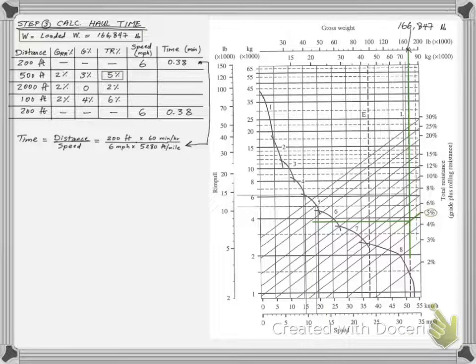We intersect with the sixth gear, which means the scraper will drive at 16.5 miles per hour. We calculate the time for the segment considering its length and speed.